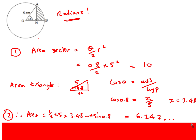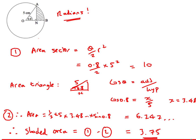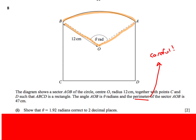Taking the sector area minus the triangle area gives the shaded region: the answer is 3.75.